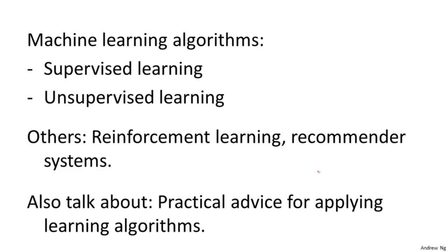Don't worry if these two terms don't make sense yet — in the next two videos I'm going to explain exactly what these two types of learning are. You might also hear other buzz terms such as reinforcement learning and recommender systems. These are other types of machine learning algorithms we'll talk about later, but the two most used types are probably supervised learning and unsupervised learning, and we'll spend most of this class talking about these two types of learning algorithms.